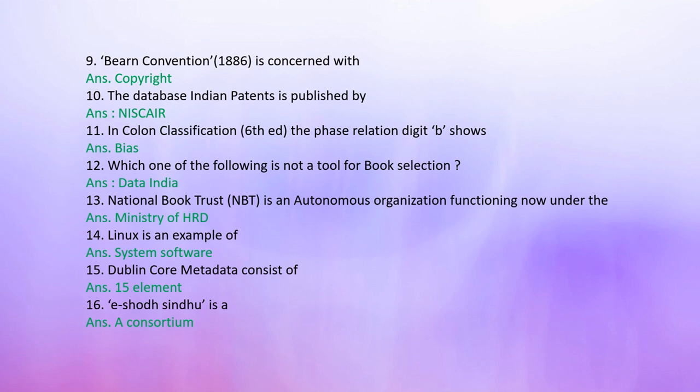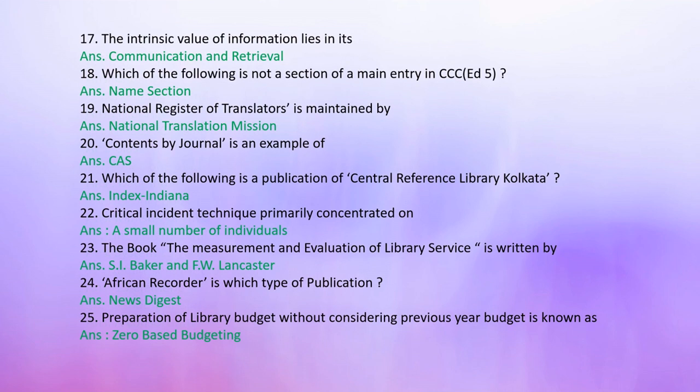In Colon Classification 6th edition, the phase relation digit B shows Bias phase. Question 12: Which one of the following is not a tool for book selection — Data India? Question 13: National Book Trust (NBT) is an autonomous organization functioning under the Ministry of HRD. Question 14: Linux is an example of system software. Question 15: Dublin Core Metadata consists of 15 elements.